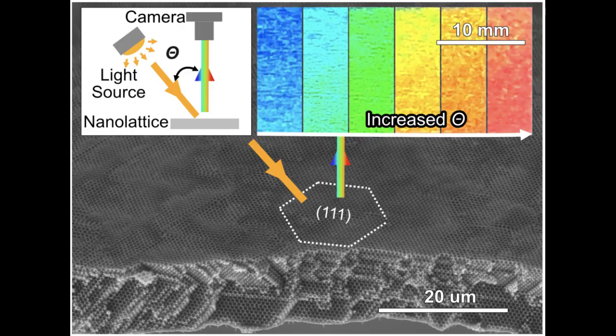Penn engineers have now solved a major problem preventing metallic wood from being manufactured at meaningful sizes, eliminating the inverted cracks that form as the material is grown from millions of nanoscale particles to metal films big enough to build with.